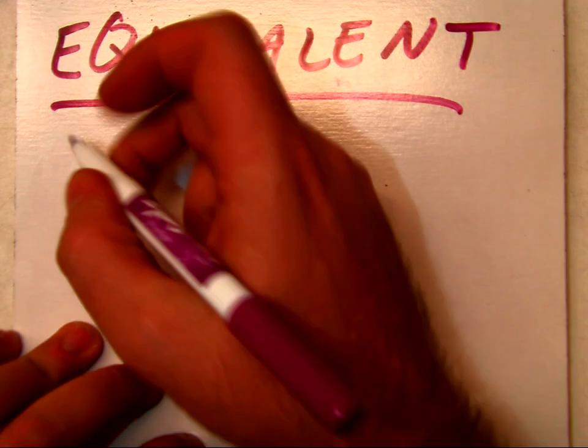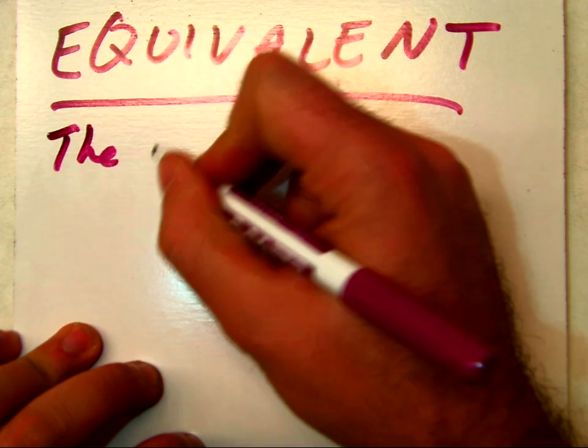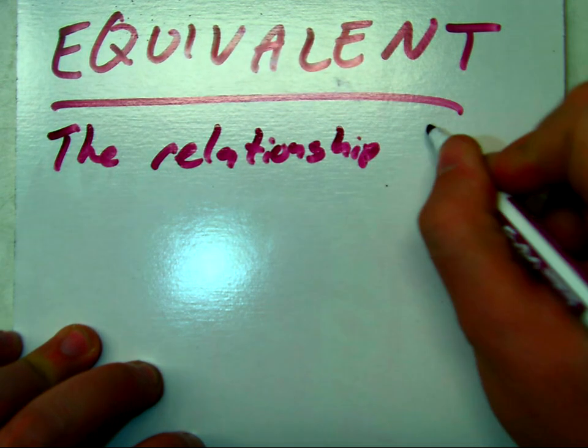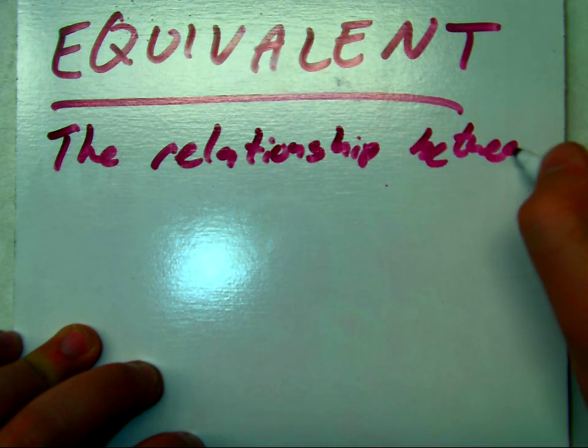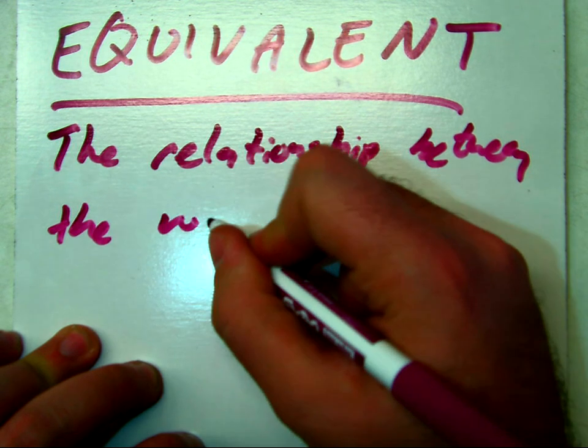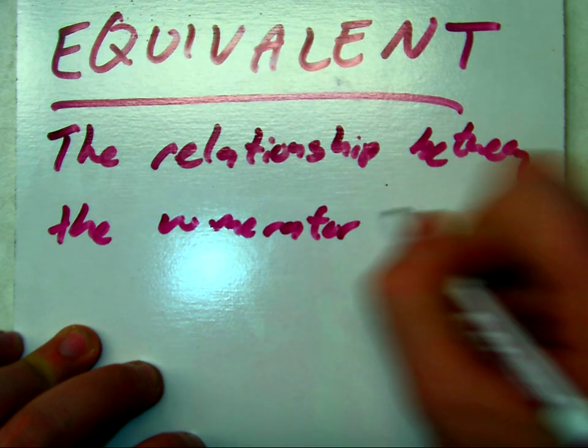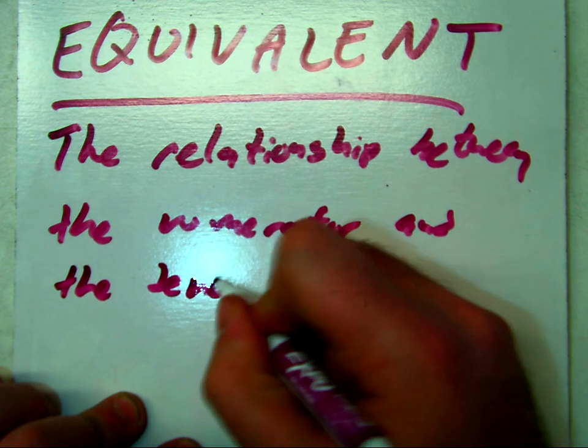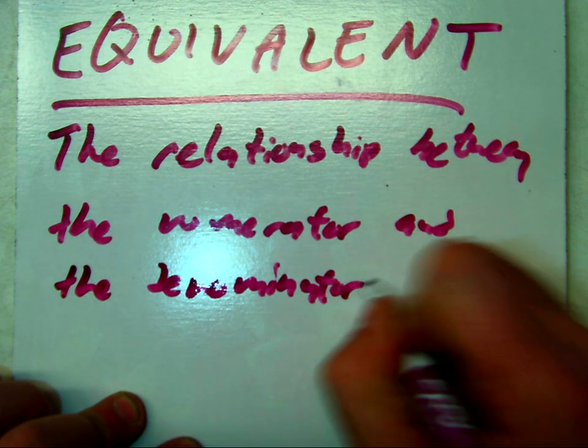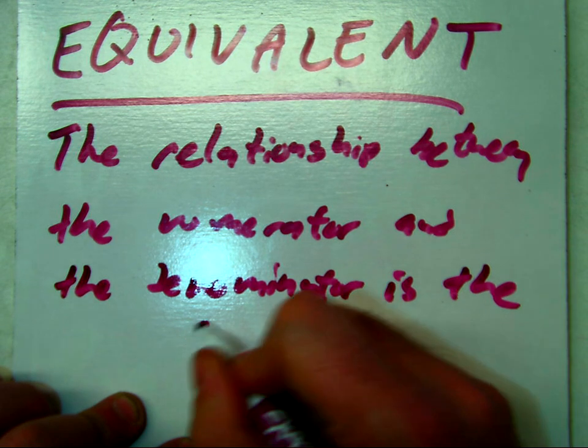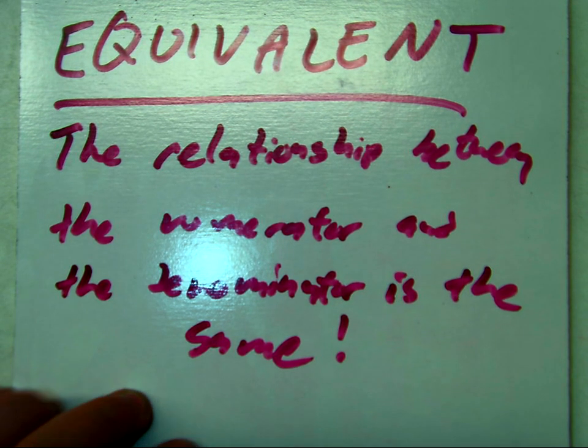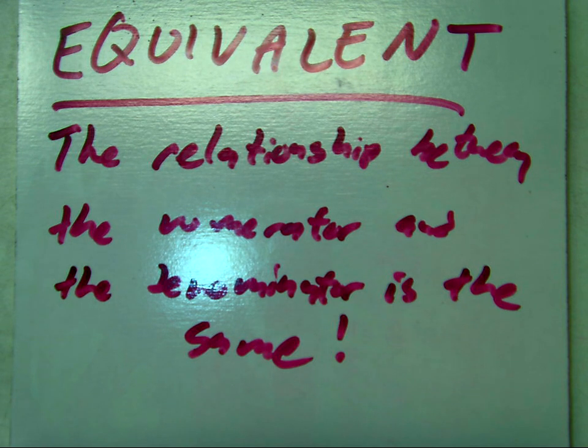When things are equivalent, it means that the relationship between the numerator and the denominator is the same. That's what, at its core, equivalency actually means.